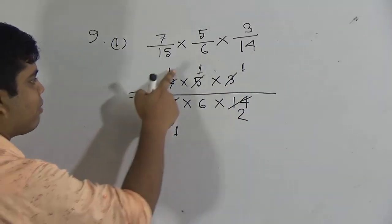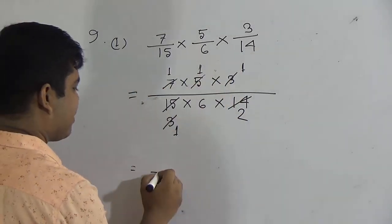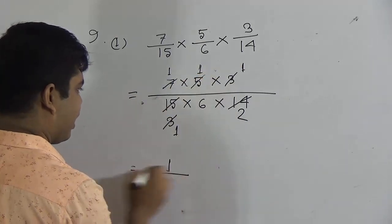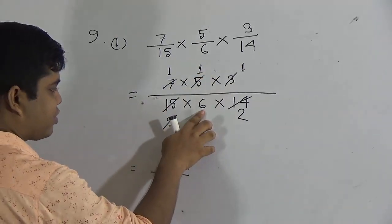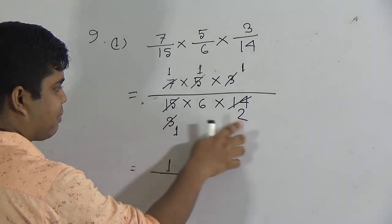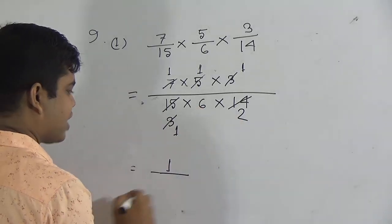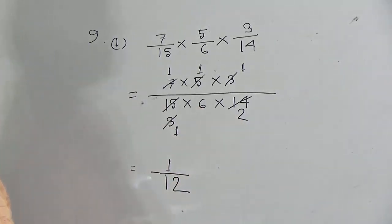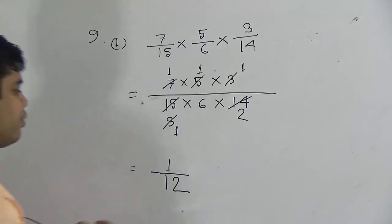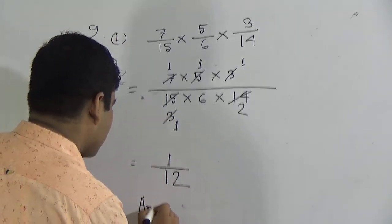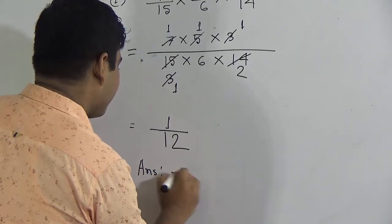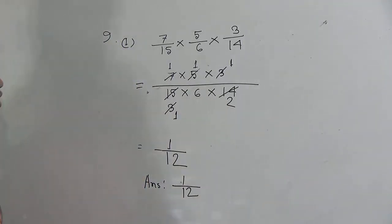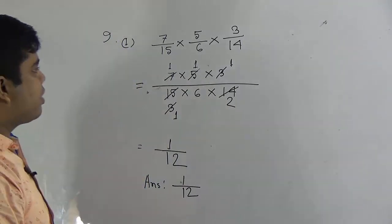So 1 × 1 × 1 = 1 as the numerator. For the denominator: 6 × 1 = 6, and 6 × 2 = 12. So 1 by 12 is the required answer of this question. I hope you have understood how to solve this type of math. Number 1 is done.